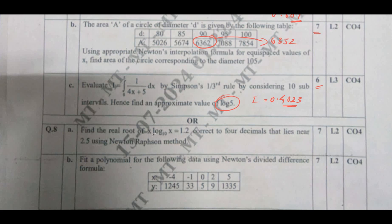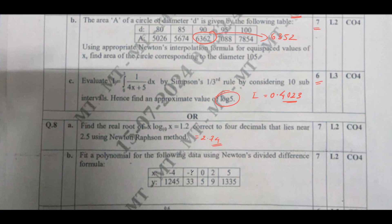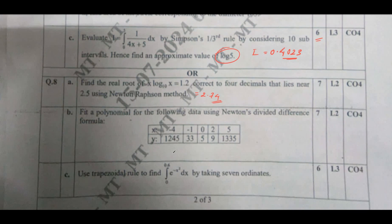Find the real root of x·log₁₀(x) = 1.2, correct to 4 decimal places, near 2.5 using Newton-Raphson method. The solution is 2.74. Also, fit a polynomial using Newton's divided difference formula for the given set of data. The polynomial expansion is 3x⁴ − 5x³ + 6x² − 14x + 5. If you got this expansion, it carries 7 marks.